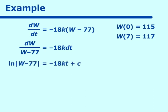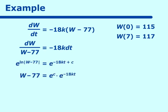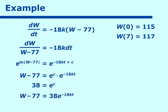Solving, we get ln of w minus 77 equals negative 18k t plus c. Raising to e, we get w minus 77 equals e to the c times e to the negative 18k t. Putting in our initial condition of t equals 0 and w equals 115: when t is 0 the exponential term wipes out, so e to the c equals 115 minus 77, which is 38. Substituting back in: w minus 77 equals 38 e to the negative 18k t.